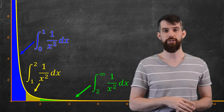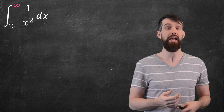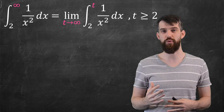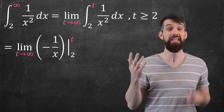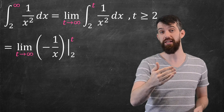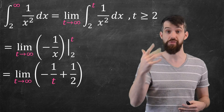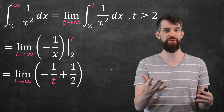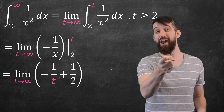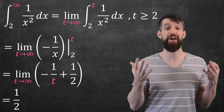Applying the same definition to 1 over x squared: this is the limit as t goes to infinity of the integral from 2 to t of 1 over x squared dx. An antiderivative of 1 over x squared is minus 1 over x. Evaluating between 2 and t gives minus 1 over t minus minus 1 over 2. As t goes to infinity, 1 over t goes to 0, leaving behind the 1 half. So this integral converges to the value 1 half.